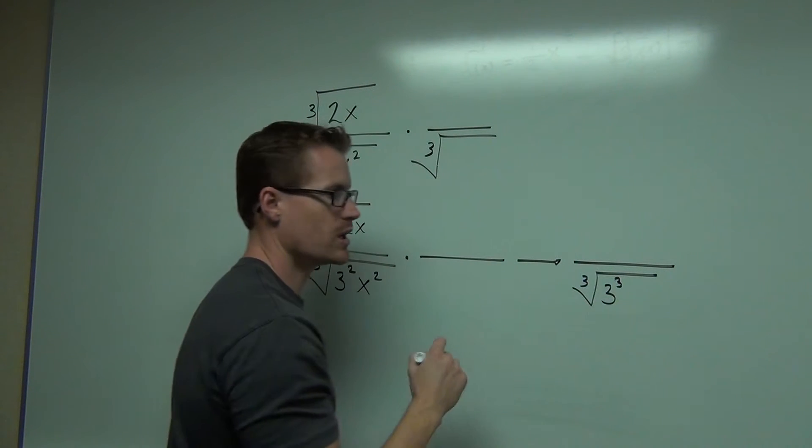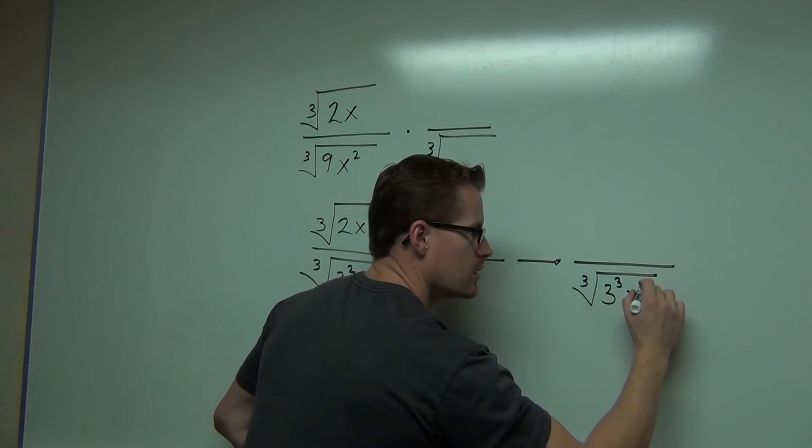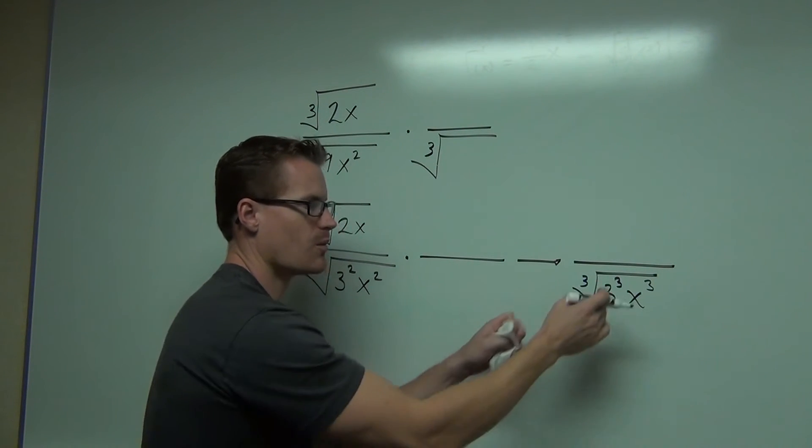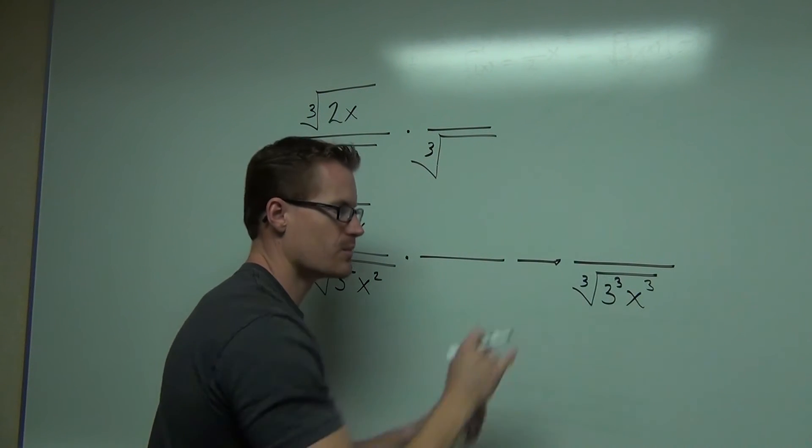So in other words, I want 3 cubed, just like I want x cubed. That's what I want, right? Because I want my cube and my cube root to match up. I want my cube and my cube root there to match up as well.